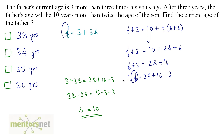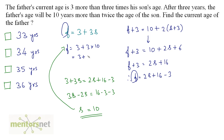We can now find F. Substituting S equals 10 into F equals 3 plus 3 times 10, we get F equals 3 plus 30. Therefore, F equals 33 years. So, the answer is option A.